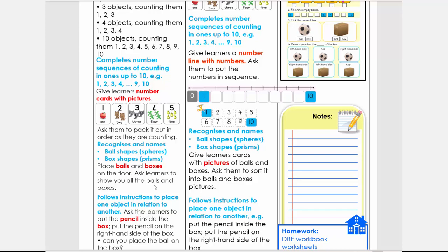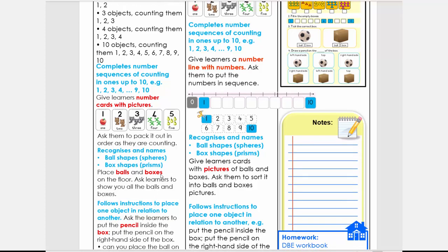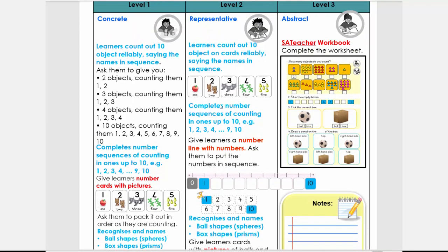So on the representative level, we focus more on pictures. So we can give them the pictures and they can count then the objects or the characters on the pictures.